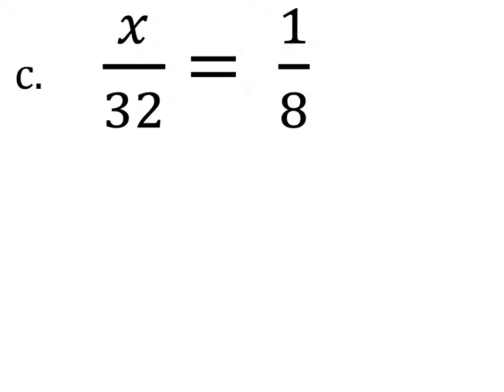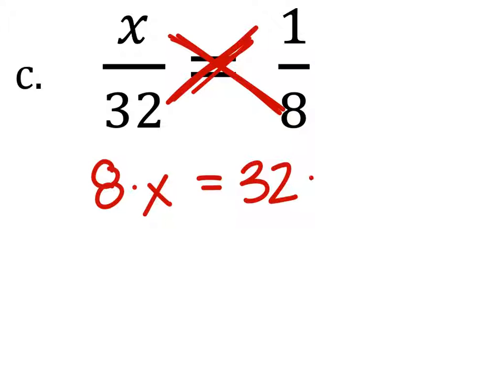So on this one, we cross diagonally and multiply those, which would be 8 times x. This will equal the other one crossed, and we do 32 times 1.